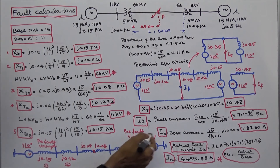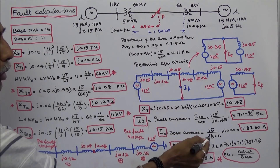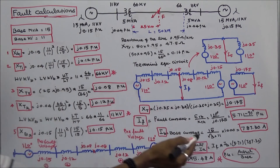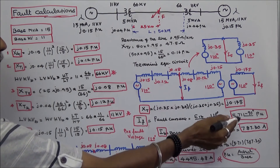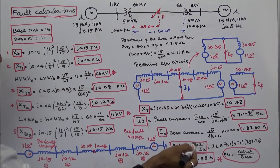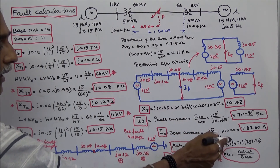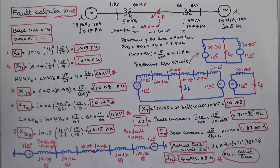Next, we calculate the base current. Base current equals base MVA (15) divided by (√3 × base KV × 1000) = 15 / (√3 × 11 × 1000) = 787.30 amps. The actual fault current is per-unit fault current × base current = 5.71 × 787.30 = 4495.48 amps.